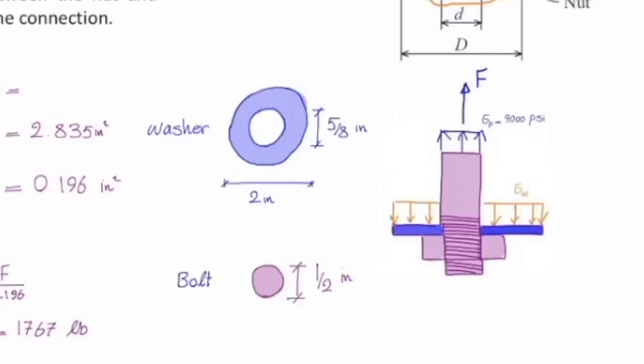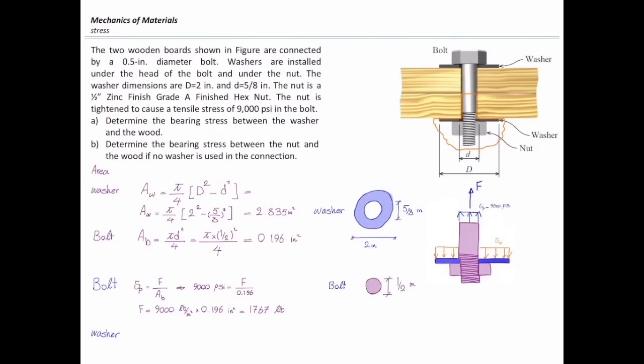If I consider equilibrium in the y direction, the resultant force acting on the washer should be equal to that force because there is not any other force. And how can I determine stress in washer? I will use the same equation. So, I will say sigma is equal to F divided by A. So, sigma W would be force divided by area of washer. And I simply plug the values. Force is 1767 pound. Area of washer is 2.835 squared inch. And the stress in that case would be 623 psi.